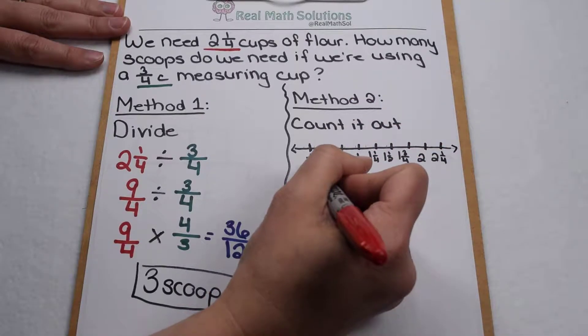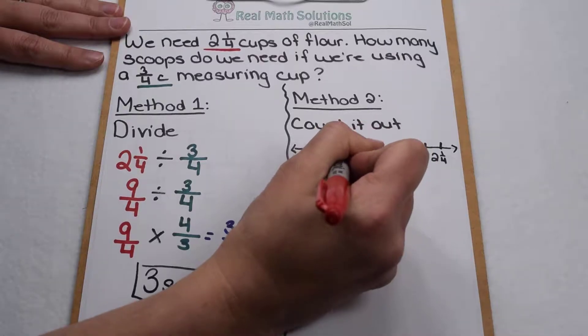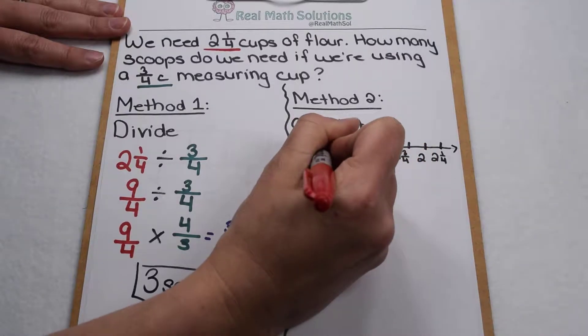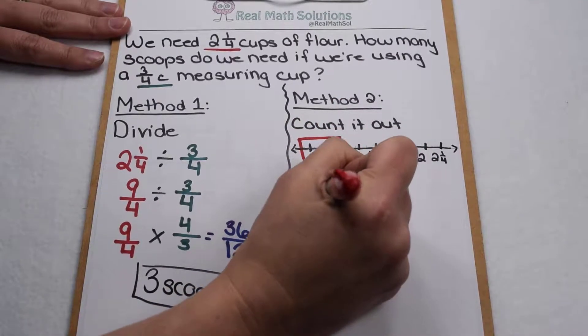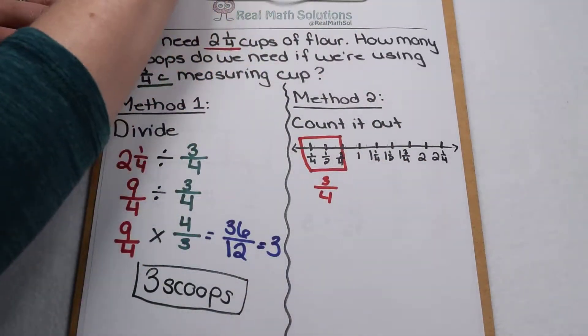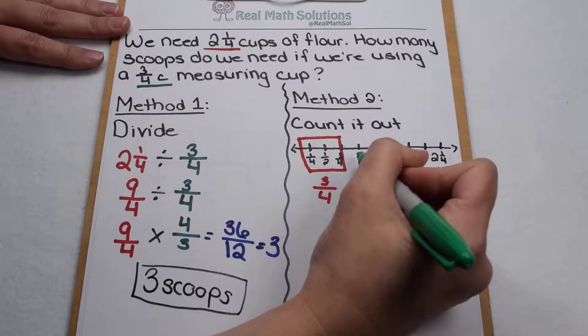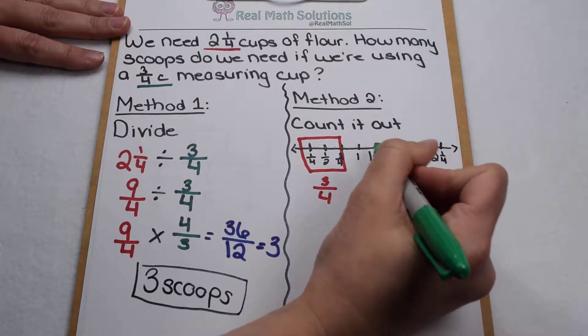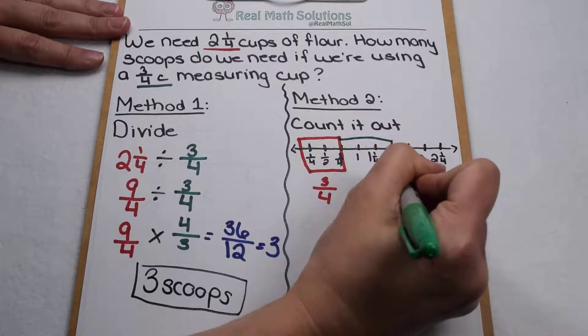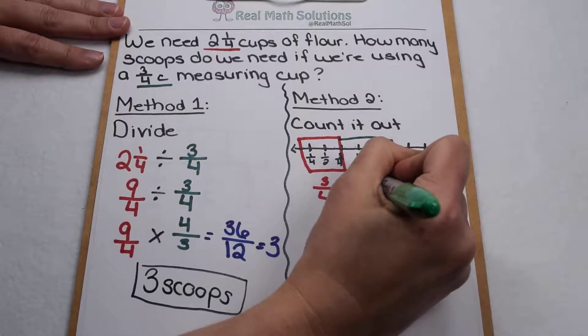So for my first scoop I would need one fourth, two fourths, three fourths scoop. So there is one scoop. Then I would need to do it again. Another three fourths would be one fourth, two fourths, three fourths. That would take me up to a total of one and a half cups.